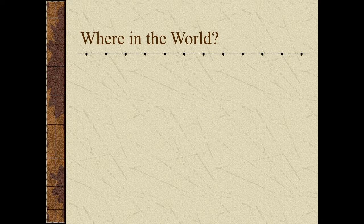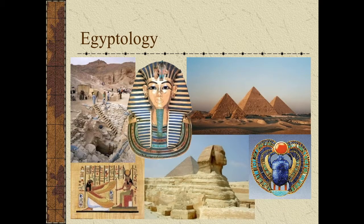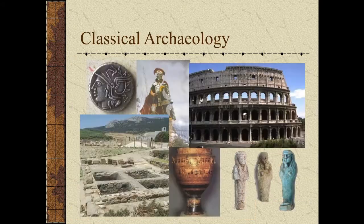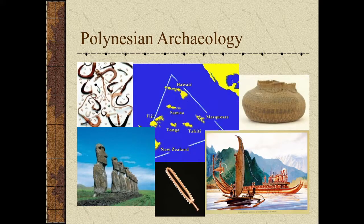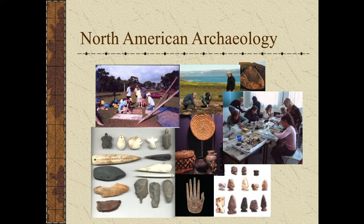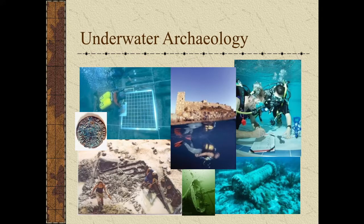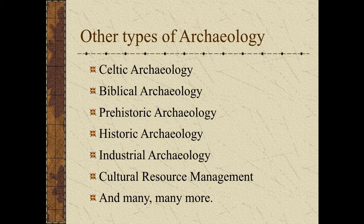Where in the world do archaeologists work? The answer, of course, is everywhere. There are archaeologists who specialize just in Egyptology, or the history of Egypt. Classical archaeology covers Greek and Roman study. There's also Polynesian archaeology, Mayanology — studying the people of the Mayas in Mexico — North American archaeology, Utah-specific archaeology, underwater archaeology, and many other types as well. Archaeologists work all over the world trying to find out what the people were like who came before us.